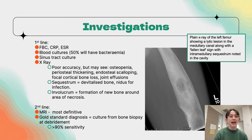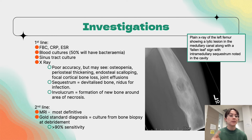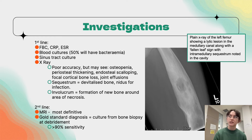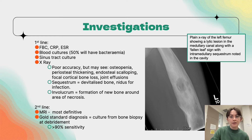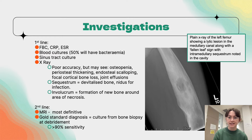Moving on to investigations. First line, we'd do blood tests — a full blood count, CRP, and ESR. In the full blood count we look at white cells; however, this has low specificity in osteomyelitis, raised in only about a third of patients. ESR and CRP are better markers, and a decrease in ESR is reassuring during treatment. The aim is to pursue a microbiological diagnosis to facilitate tailored antibiotic therapy.